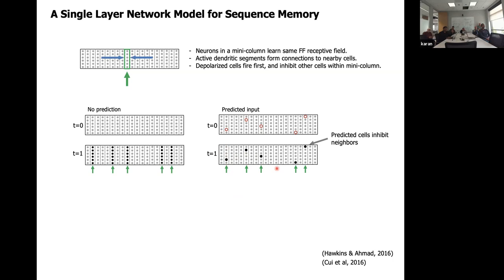But if you had predicted input — say these red cells at time t=0 were depolarized and predicting their input — when the input does arrive, these depolarized cells inhibit the other cells in the mini-column. You get a very sparse code that represents this prediction in the context of the prior input. This was the basis for our sequence memory.